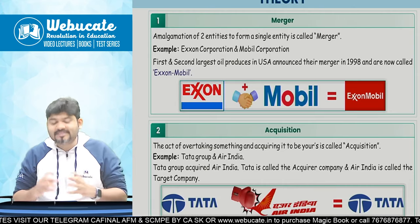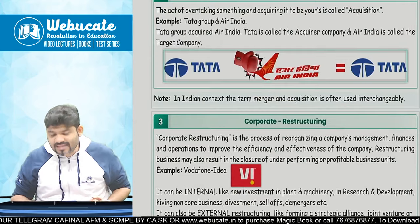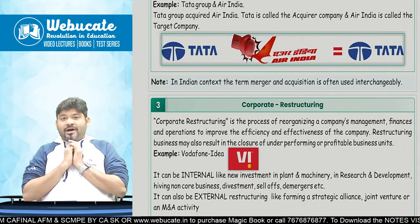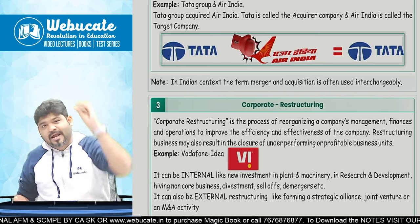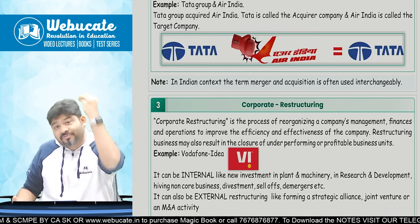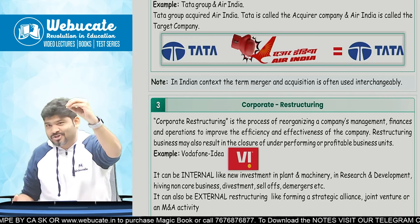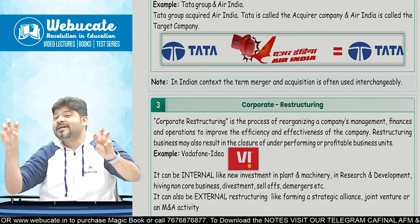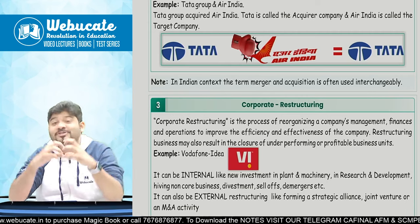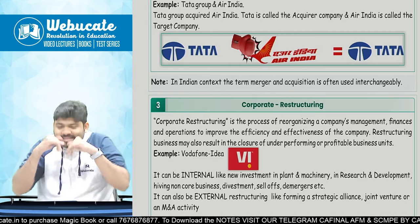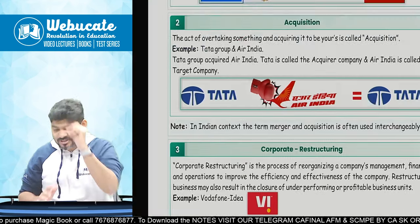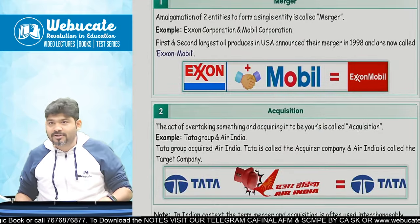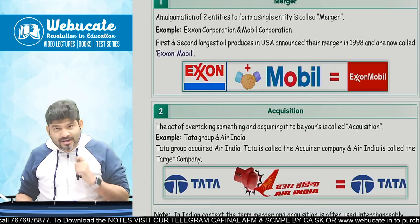The way Tata acquired Air India — when Tata Airlines acquired Air India, Air India is no longer in existence, it is Tata Airlines. That is called acquisition. Then we have corporate restructuring — something that happened with Vodafone. Vodafone was first called Orange, then Hutch, then taken over by Vodafone, then Idea was an independent entity, then there was a merger between Vodafone and Idea, and then they did some corporate restructuring.